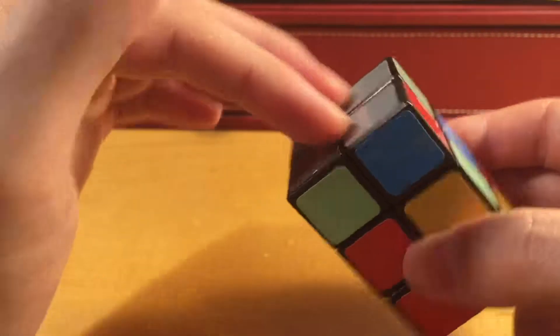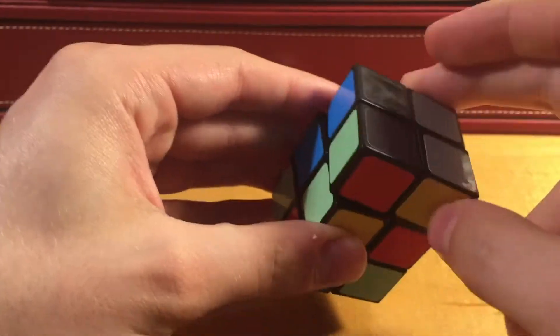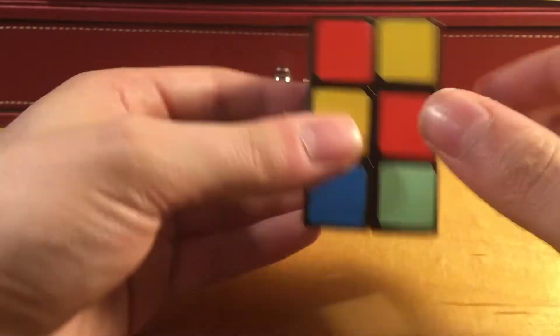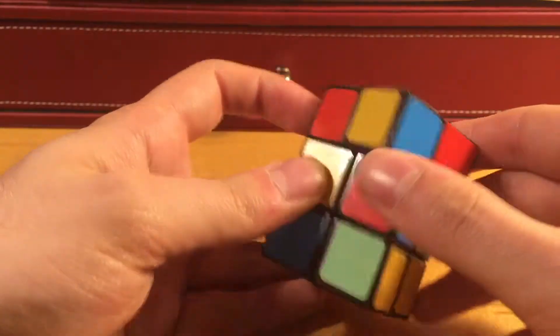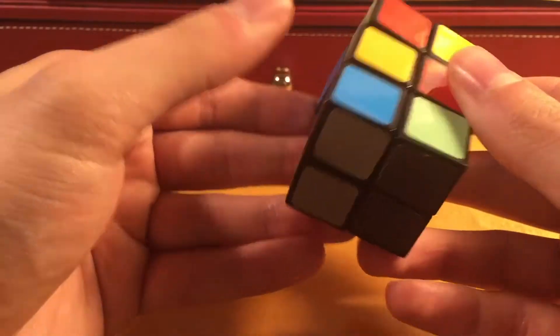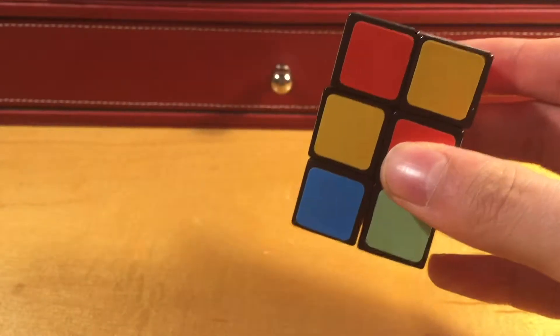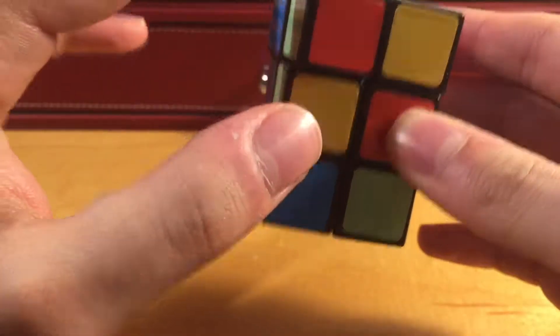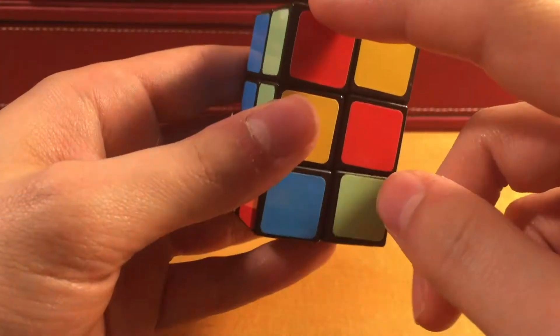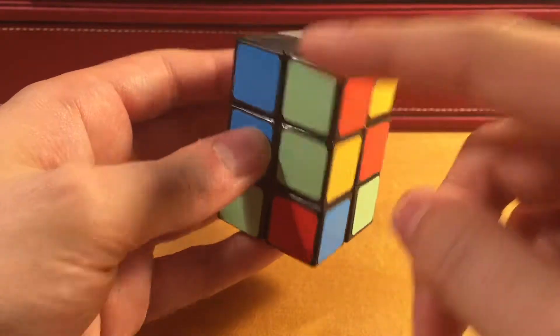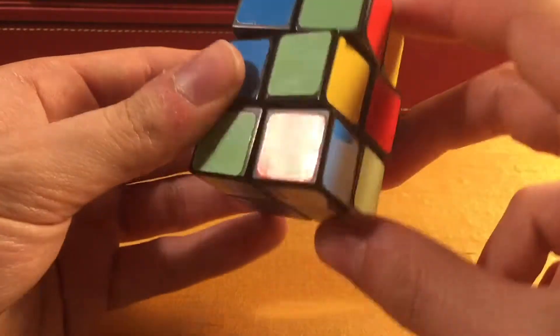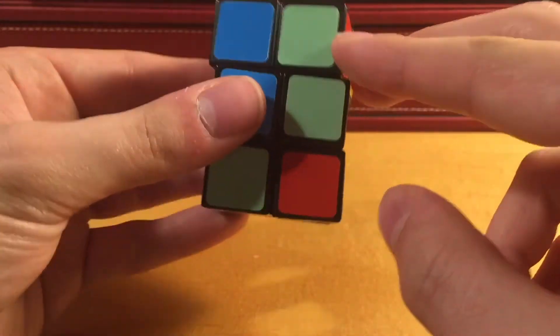And I begin by looking for other dark gray corners, and there's none on this face, so they have to be over here. Holding the cube with the light gray face facing down, I'm going to look for one of the corners that'll go into the dark gray face. So, here's one of the corners that I need. Now, this is the red, green, and dark gray, and this corner is going to go here, because over here, you see that this is gray, this is green.